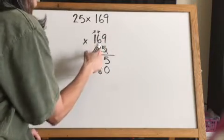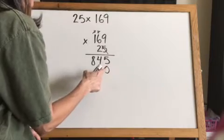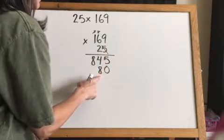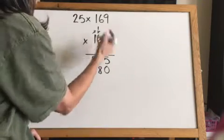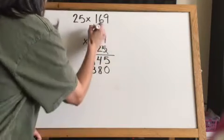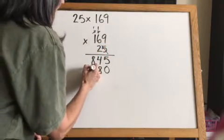So I also teach my kids make sure you put this answer underneath the tens so that 8 is going to go underneath that 2, whether you have a zero placeholder or not. So 9 times 2 is 18, we wrote down our 8, we're going to carry our 1. 2 times 6 is 12 plus 1 is 13, carry the 1, and 2 times 1 is 2 plus 1 is 3.